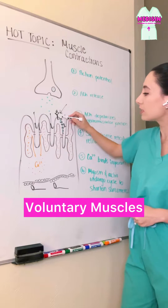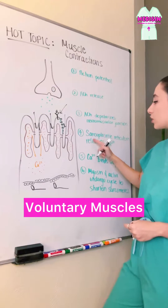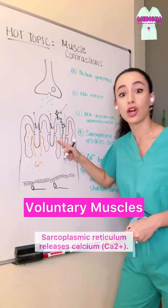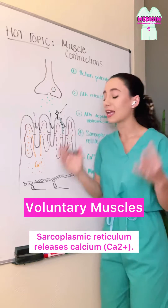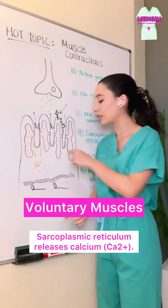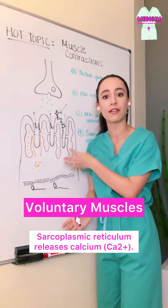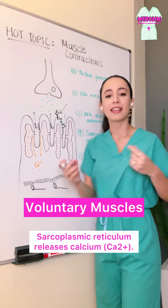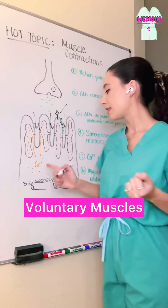As we depolarize the entire myocyte, we start having the sarcoplasmic reticulum emptying and releasing tons of calcium inside of the muscle. This calcium is key — without it, these muscles won't contract.